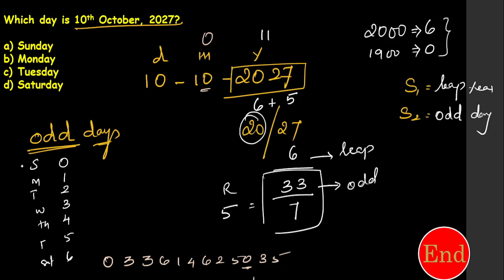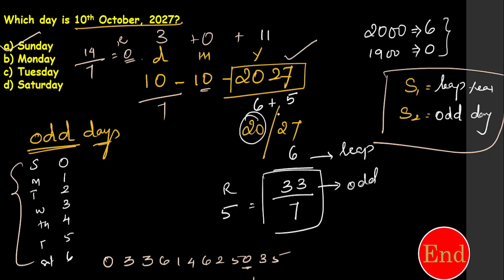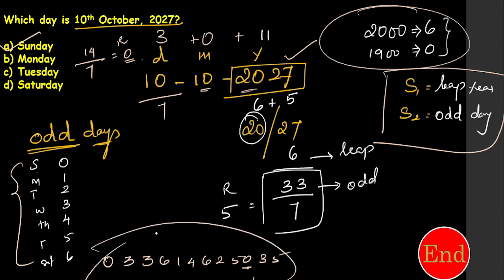Now 14 divided by 7 gives remainder 0. Zero means Sunday. So Sunday is the right answer. It is very simple — in only two steps you get odd days for the year. If you know the century code and the month code, and divide the day by 7, you can add everything up and get the answer.